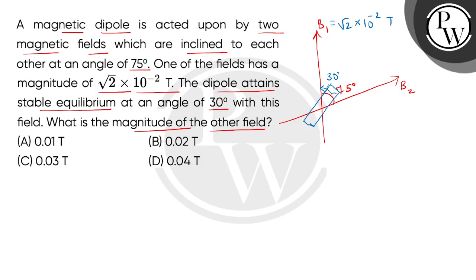So the second magnetic field angle will be 45 degrees. Let's find the magnitude of B2.